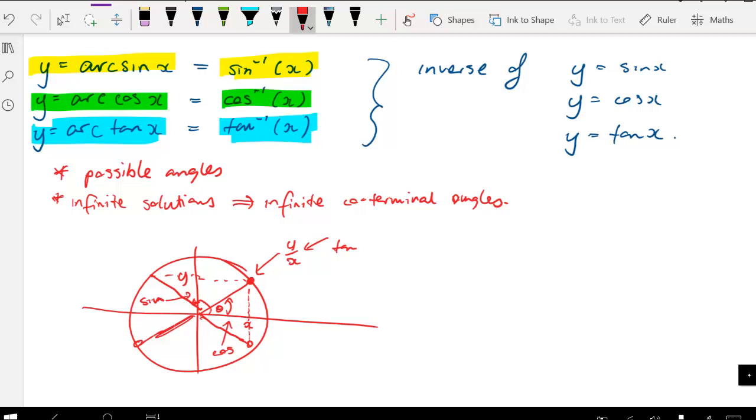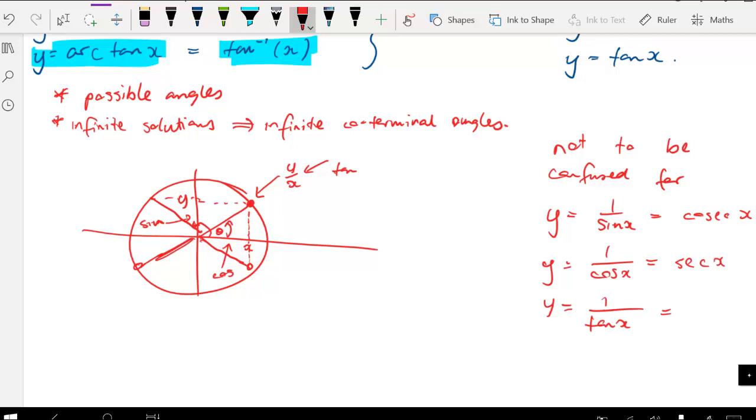Make sure you understand that these are the inverse of those original sin x, cos x, and tan x functions. They are not to be confused with one over sin x, which is cosec x, one over cos x, which is sec x, and one over tan x, which is cot x. These are different. These are reciprocal functions, whereas these are inverse functions of our sin, cos, and tan.